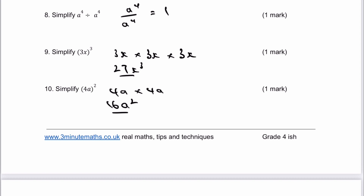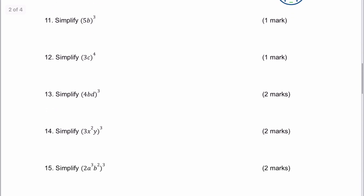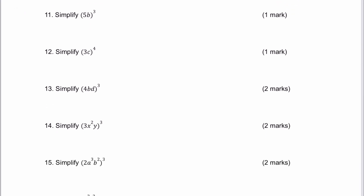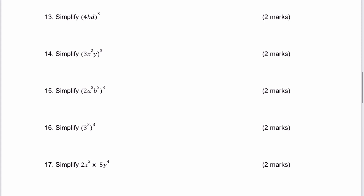These general principles follow for all work through indices, and these questions are more representative of the kind you'd get in a GCSE. We've got 5b cubed: 5 cubed is 125 and b cubed is b cubed. Number 12: 3 to the power of 4 is 81, and c to the power of 4 is c to the power of 4. Number 13: 4 to the power of 3 is 64, b to the power of 3 is b cubed, and d to the power of 3 is d cubed.